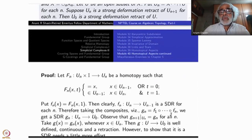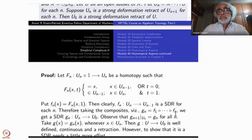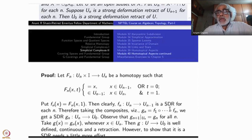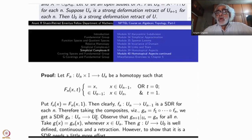Put gn equal to f1 ∘ f2 ∘ … ∘ fn. fn brings un to un−1, then un−1 to un−2, and so on, until finally f1 brings the entire thing into u0. So gn is a retraction of un to u0. Being a composite of retractions, it is a retraction. Each of them is a strong deformation retraction, and we can take composites, so this will be a strong deformation retract from un to u0.